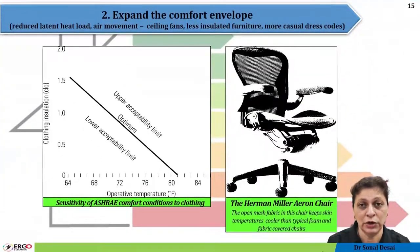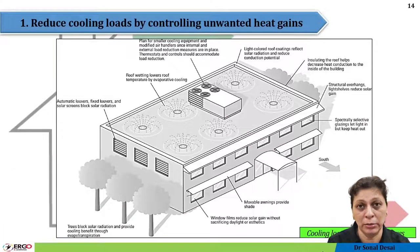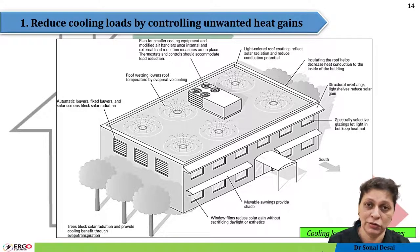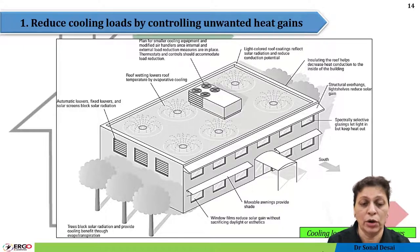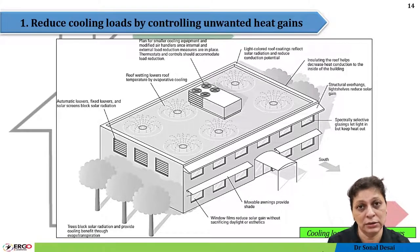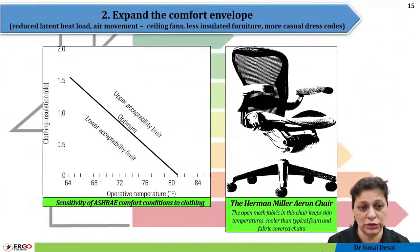For example, a building image is shown where by different alternatives the building energy requirement can be reduced — such as having proper shading in the sun travel direction, using evaporative cooling on the rooftop, using overhangs, or selecting a proper location for the cooling tower. By adopting such design criteria we can make a building energy efficient.